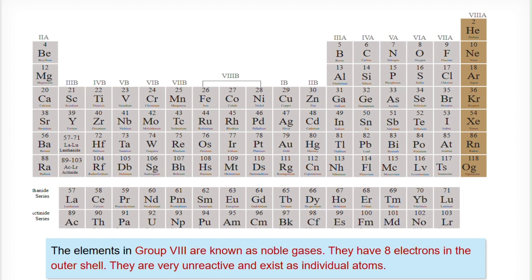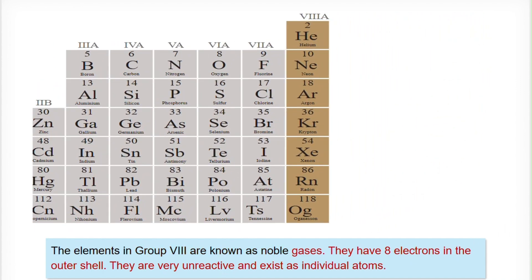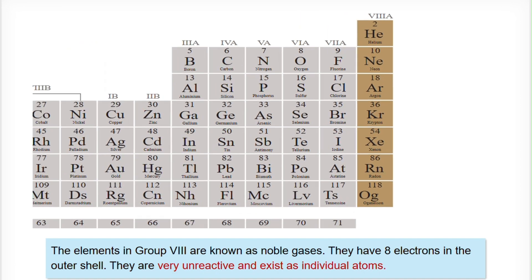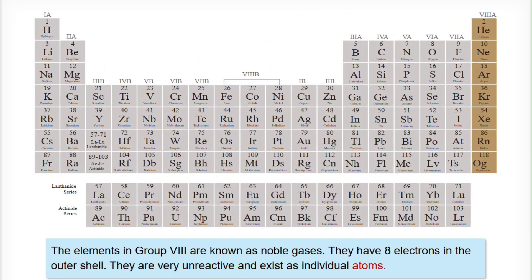The elements in group 8 are known as noble gases. They have 8 electrons in the outer shell. They are very unreactive and exist as individual atoms.